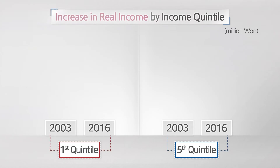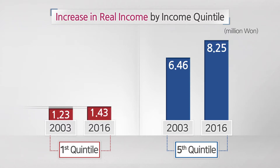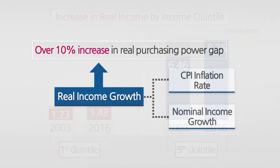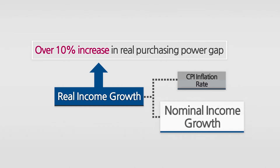On an examination of the real income, which reflects the CPI and nominal income, we can observe that while the real monthly income for the first quintile increased an average of just 200,000 won, from 1.23 million to 1.43 million, that of the fifth increased a staggering 1.79 million won, hitting 8.25 million from 6.46 million. Based on the comparison results, it can be estimated that the gap in real purchasing power between the first and fifth quintiles increased by more than 10% during the past 13 years, mainly driven by the growth rate in nominal income and inflation.